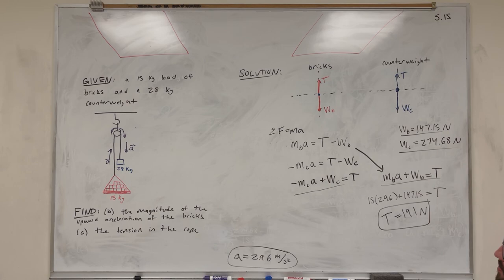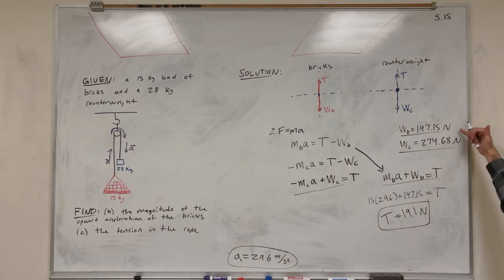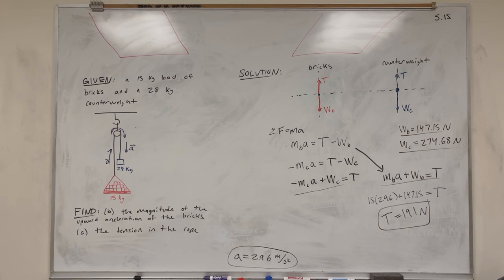We've answered every part. Notice that the tension of 191 newtons is greater than the weight of the bricks (147.15 N) but less than the weight of the counterbalance (274.68 N). That explains why the counterbalance accelerates downward while the bricks accelerate upward. That's how you solve this problem — free body diagrams and a system of equations. Check out the playlist for more, leave questions in the comments, and I'll see you next video. Peace.